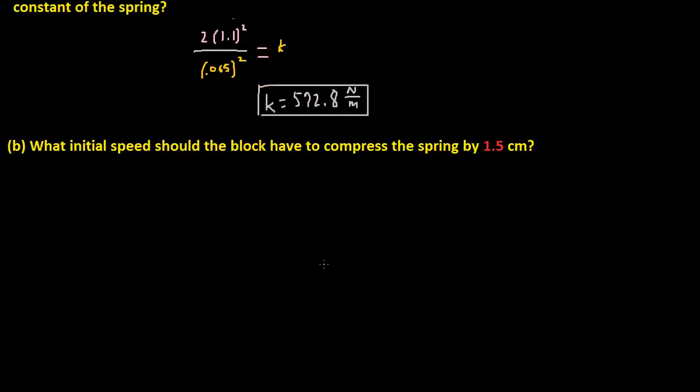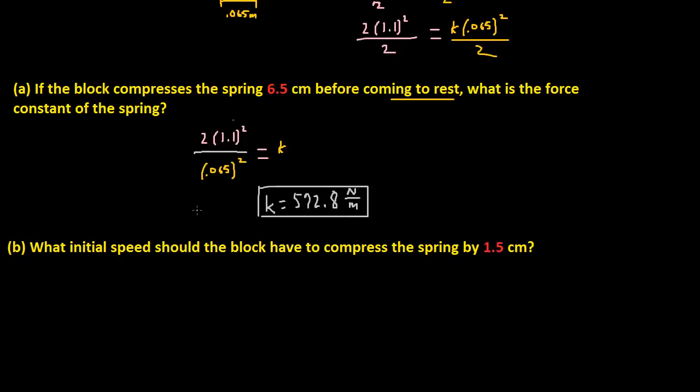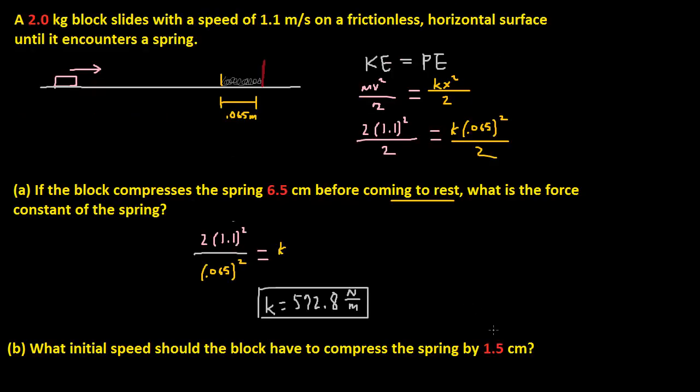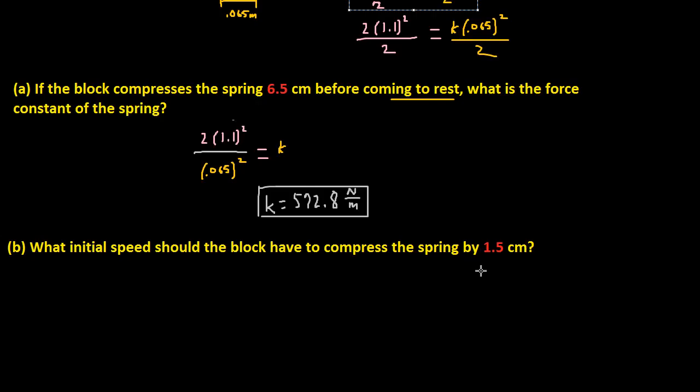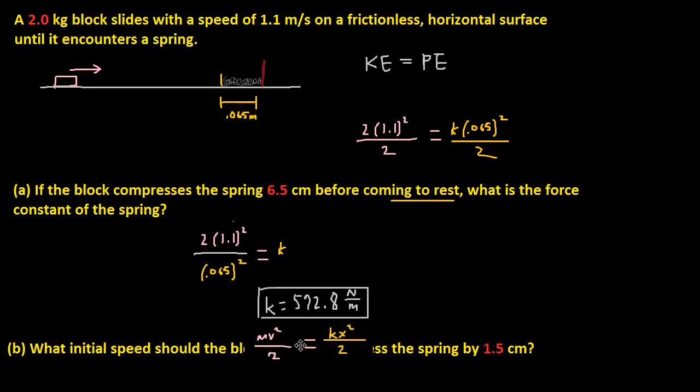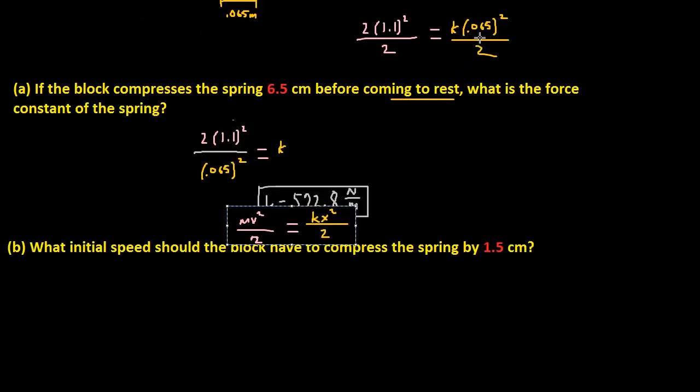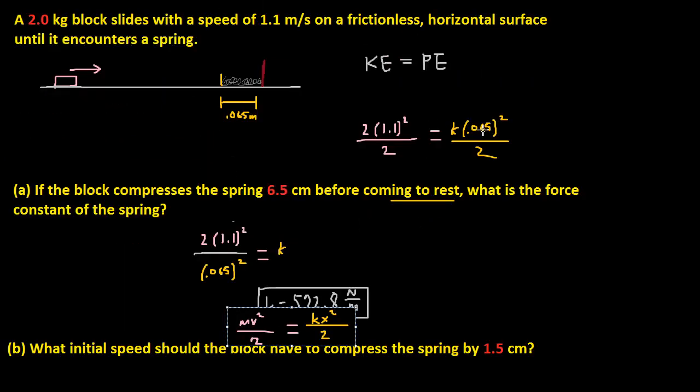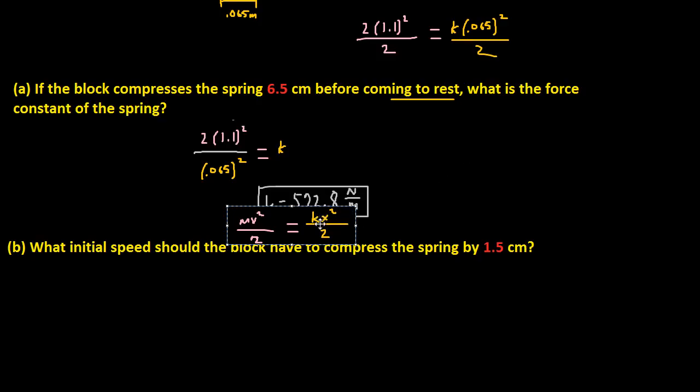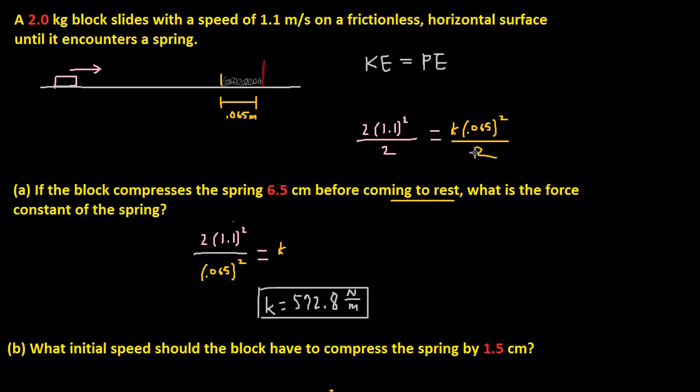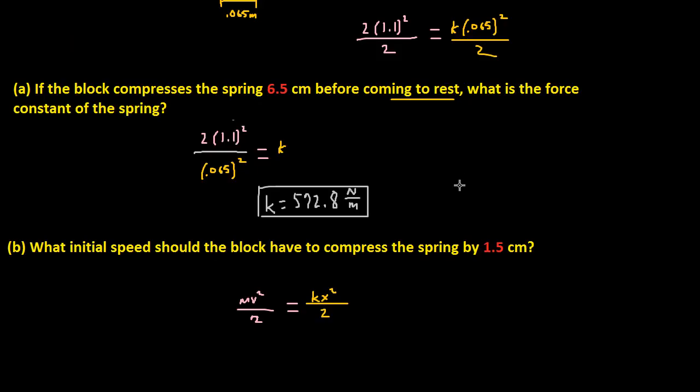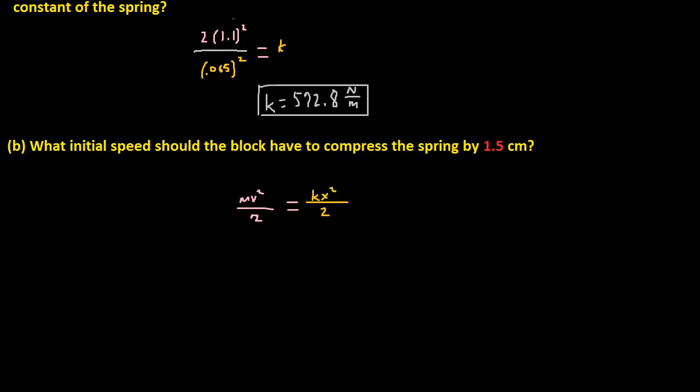What is the initial speed? What initial speed should the block have to compress the spring by 1.5 centimeters? Well, that's actually the same thing as before, except we use 1.5, or we use 0.015 instead of 0.065 because you're compressing that much. And we solve for V this time.